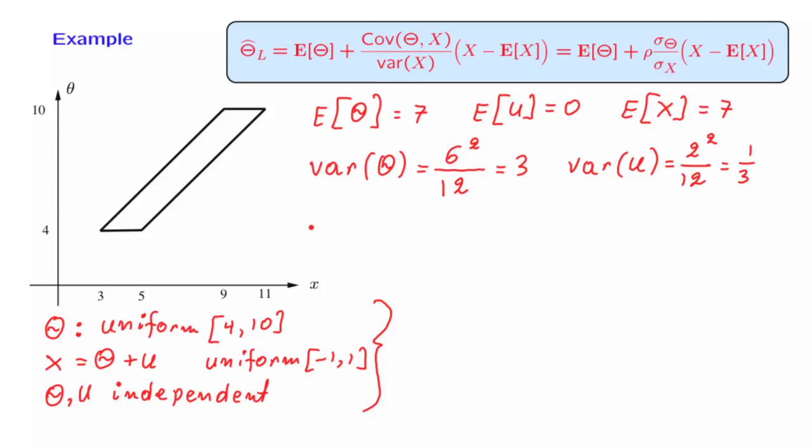Now let us look at the variance of x. Since x is the sum of theta and u, and since the two of them are independent, the variance of x is going to be the sum of these two variances, which is 10 over 3.